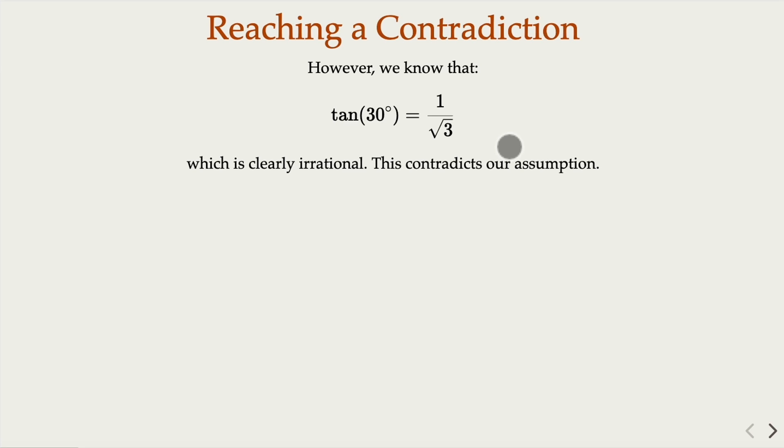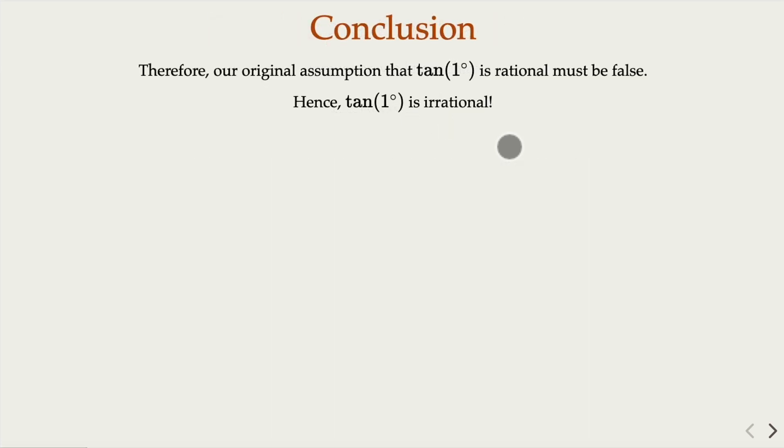So we have proved that tangent of one degree is irrational through proof by contradiction. That's the proof.